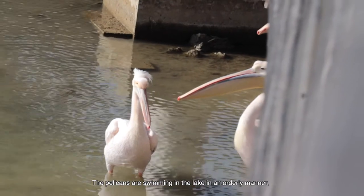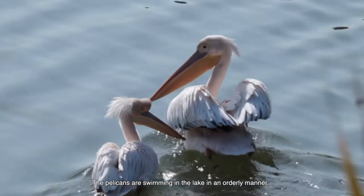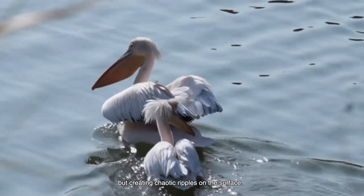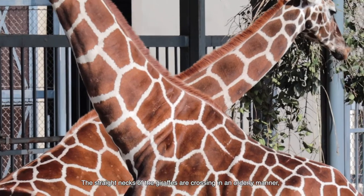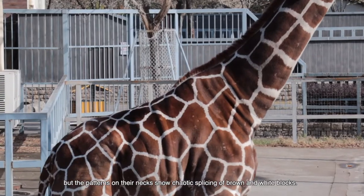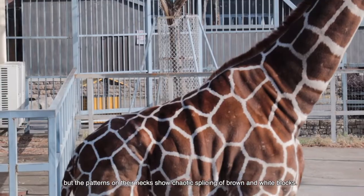The pelicans are swimming in the lake in an ordinary manner, but creating chaotic ripples on the surface. The straight necks of the giraffes are crossing in an ordinary manner, but the patterns on their necks show chaotic splicing of brown and white blocks.